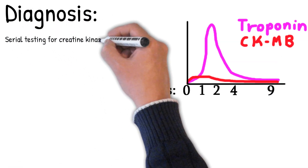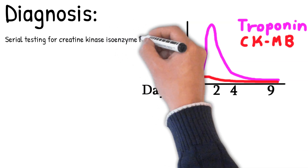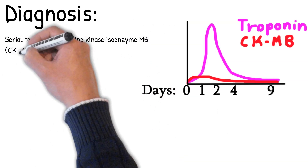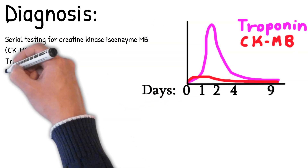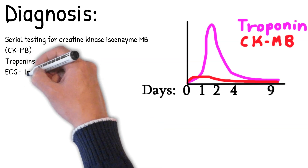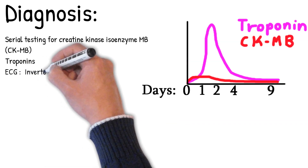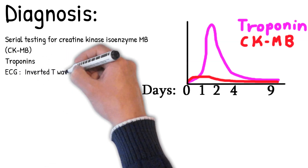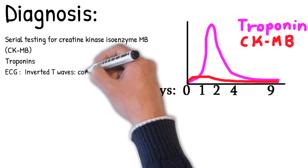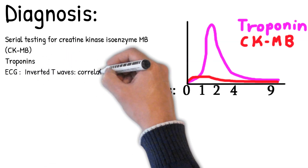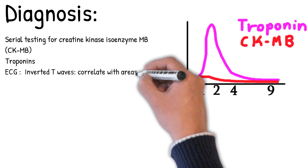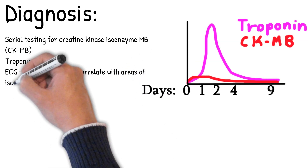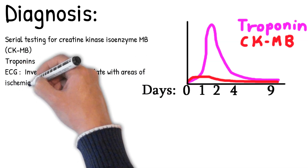Serial testing for cardiac troponins I (cTnI) is also used. Troponins normally regulate calcium-mediated muscle contraction. cTnI appears within 3–12 hours, peaks at 24 hours, and disappears within 7–10 days.